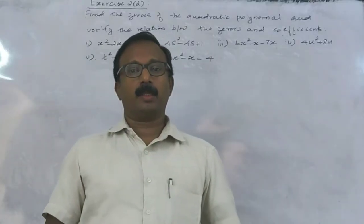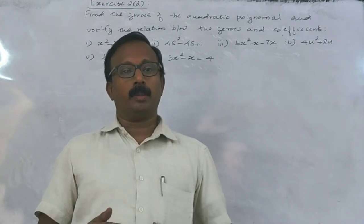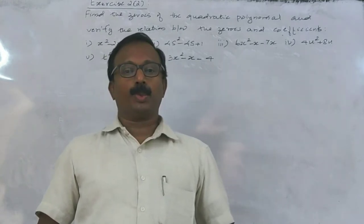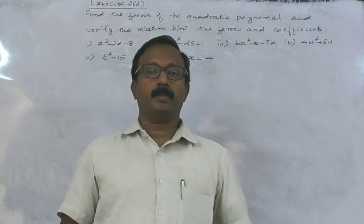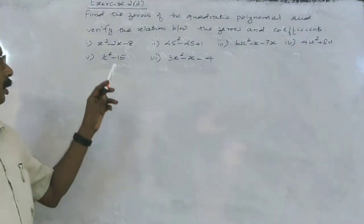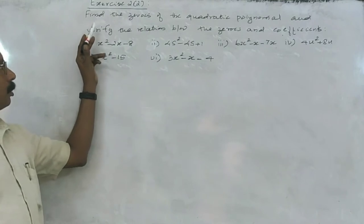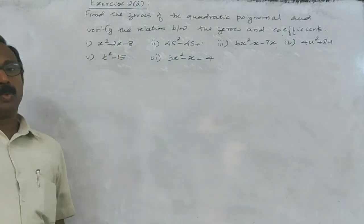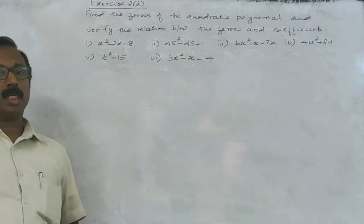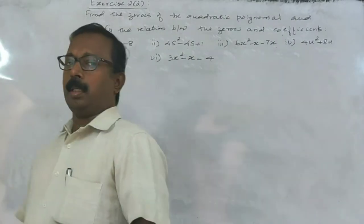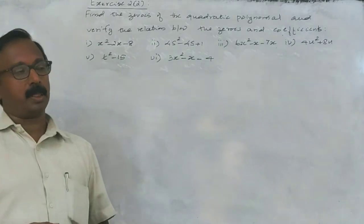Hi students, today we are doing exercise 2.2 of Cluster CVC. We saw exercise 2.2 here — we want to find the zeros of the quadratic polynomial and verify the relationship between the zeros and coefficients.